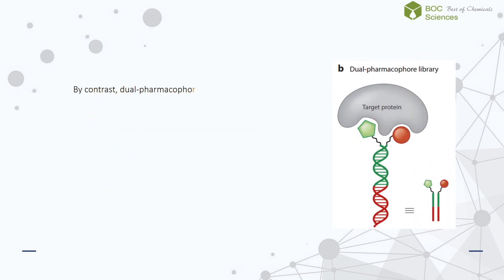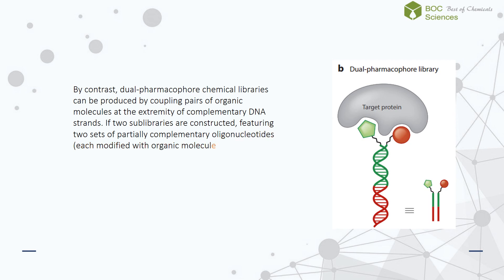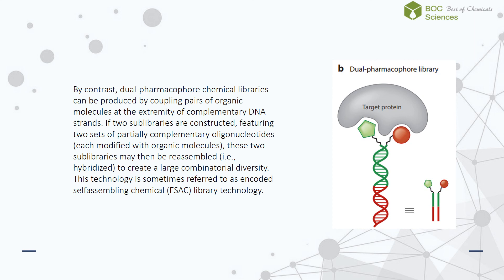By contrast, dual pharmacophore chemical libraries can be produced by coupling pairs of organic molecules at the extremity of complementary DNA strands. If two sub-libraries are constructed, featuring two sets of partially complementary oligonucleotides, these two sub-libraries may then be reassembled to create a large combinatorial diversity. This technology is sometimes referred to as encoded self-assembling chemical library technology.